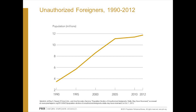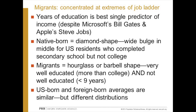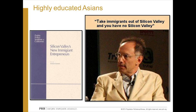The big issue in the United States over the past decade or two has been what to do about unauthorized foreigners, whose numbers increased rapidly through the 1990s and up until 2007-2008. After the recession the number stabilized, but may be starting to increase again with recovery. International migrants or foreign-born workers are concentrated among the highly skilled and the low skilled. Years of schooling is the best single predictor of income, and native-born and foreign-born Americans have different distributions.